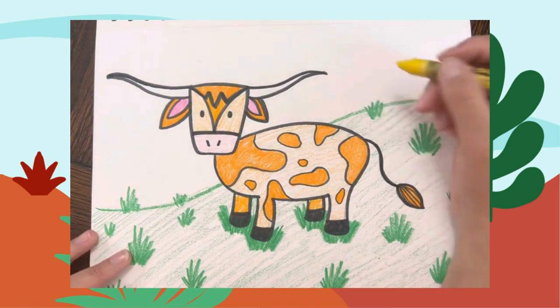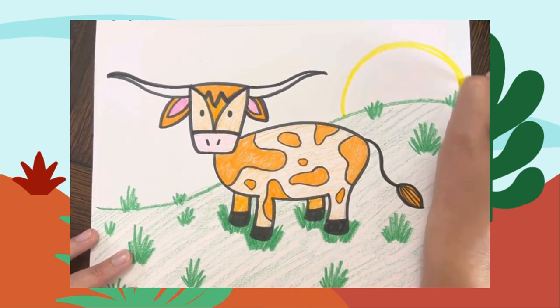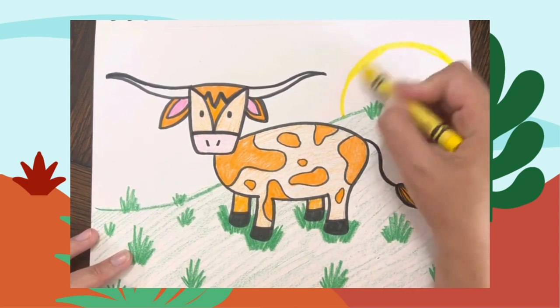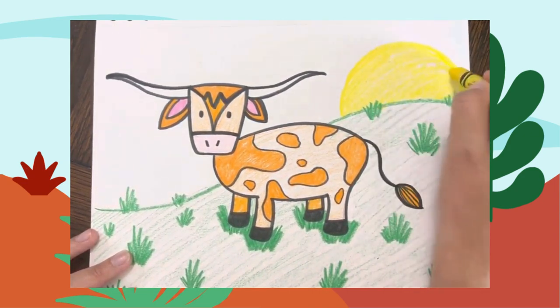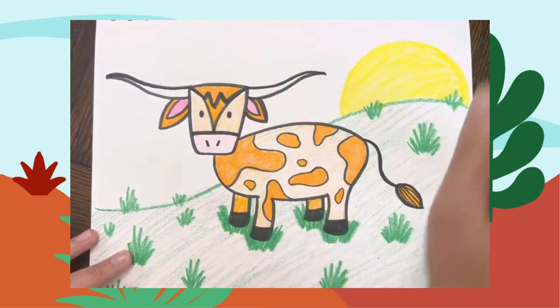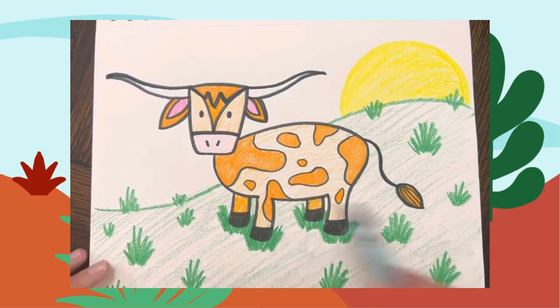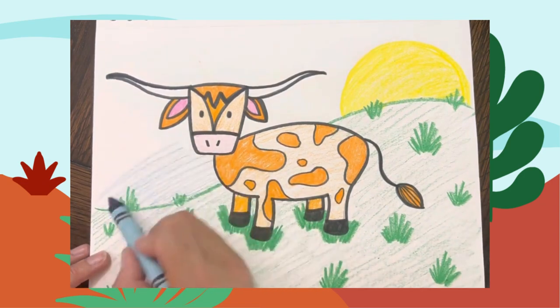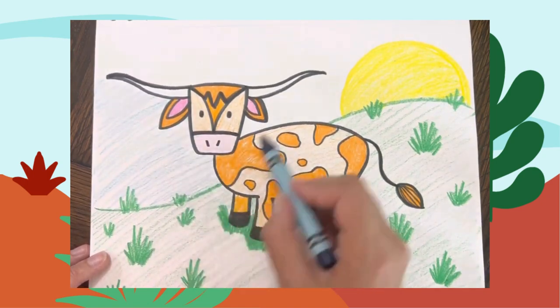And then let's get a sunset. I'm going to make a big rainbow with my yellow crayon and I'm going to color that in. You could add some oranges and pinks here and it would look really nice. And then we're going to take our blue and fill in all that white space to make our longhorn pop on the page.